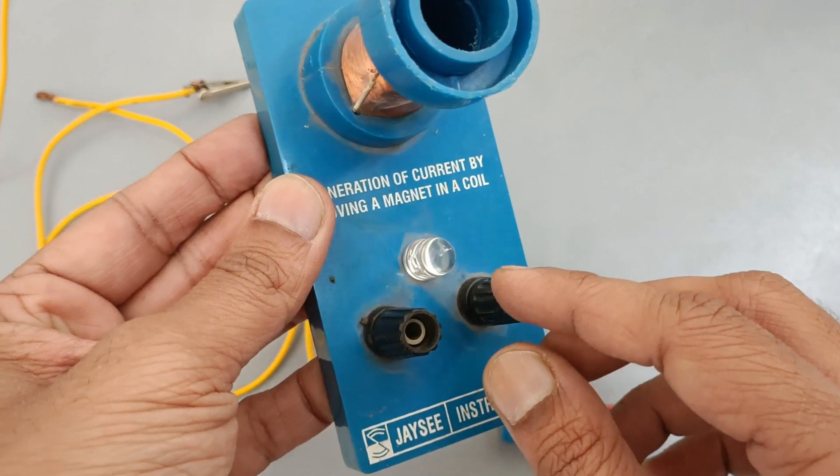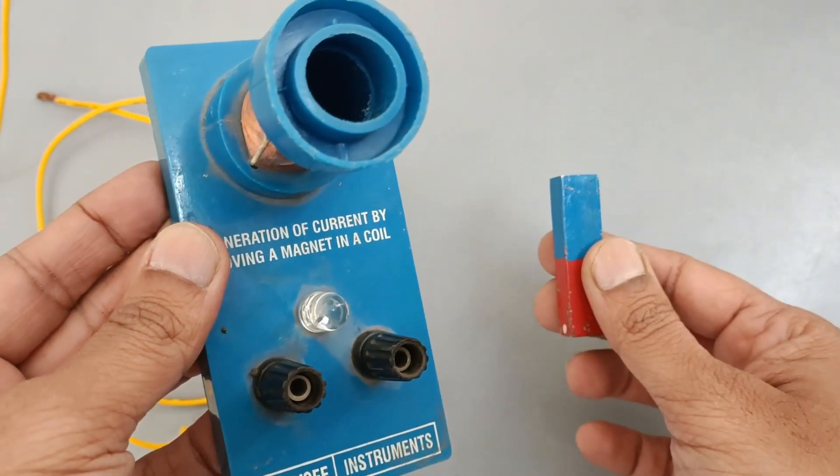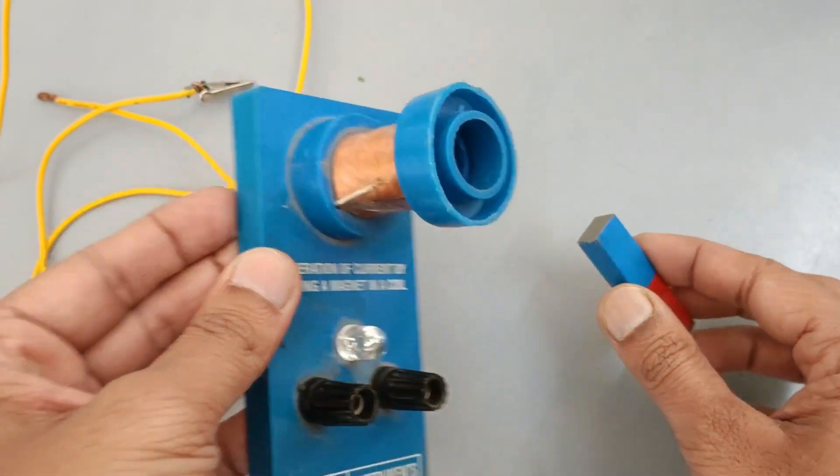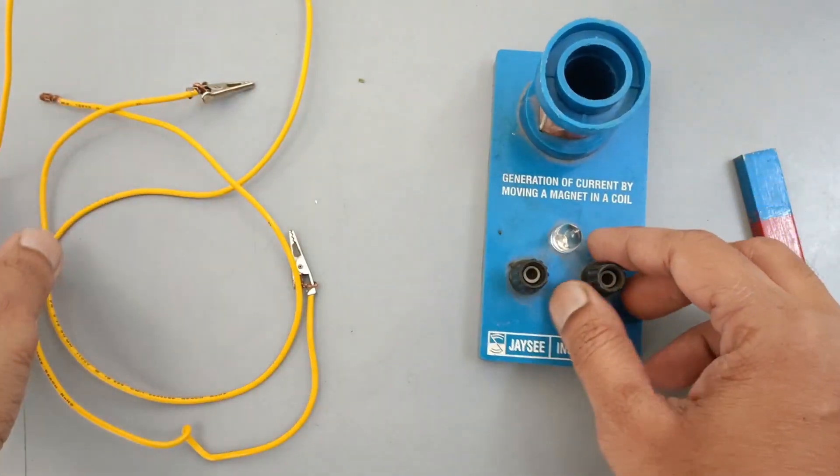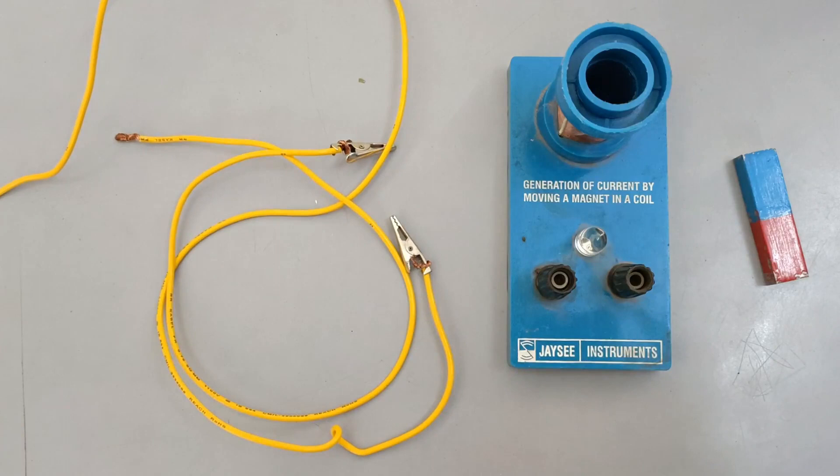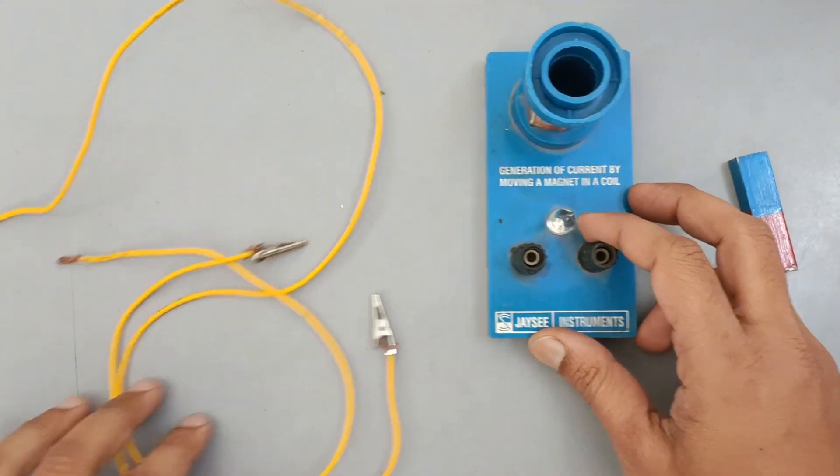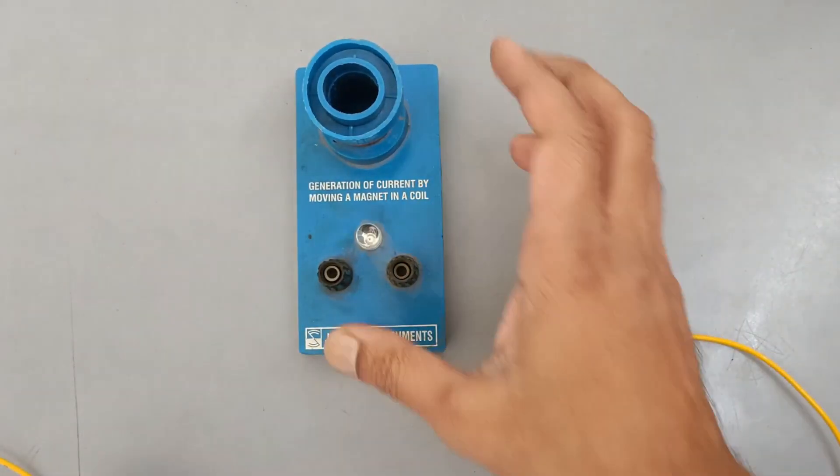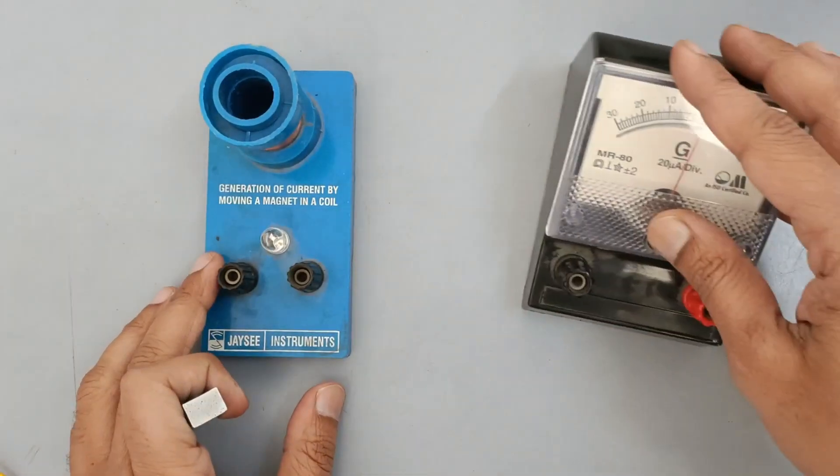These are the two ends of this solenoid. A bar magnet whose red colored part is the north pole and the blue one is the south pole. Connect two terminals of the solenoid with any two terminals of the galvanometer with the help of the connecting wires.